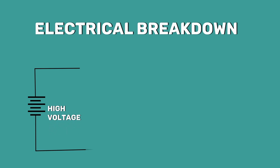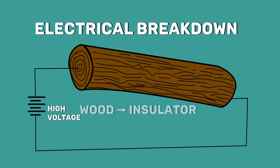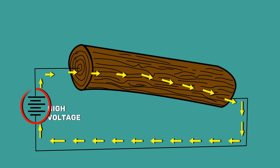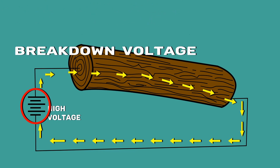We expect these insulators not to allow the current to flow through them under any circumstances. To know whether they fulfill our expectation, we must be familiar with the term electrical breakdown. It is the process when a high voltage is applied to an insulating material and it suddenly acts as a conductor. The voltage at which the insulator fails to block the current is called the breakdown voltage.